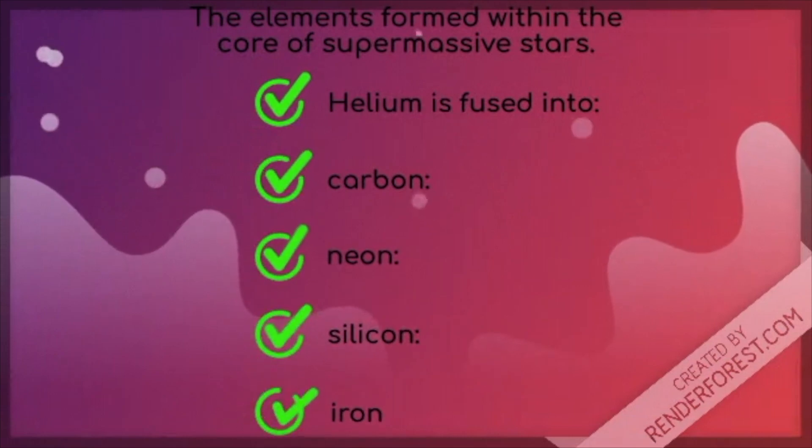The elements formed within the core of a supermassive star include helium, which is fused into carbon, which is fused into neon, which is fused into silicon, which is fused into iron.